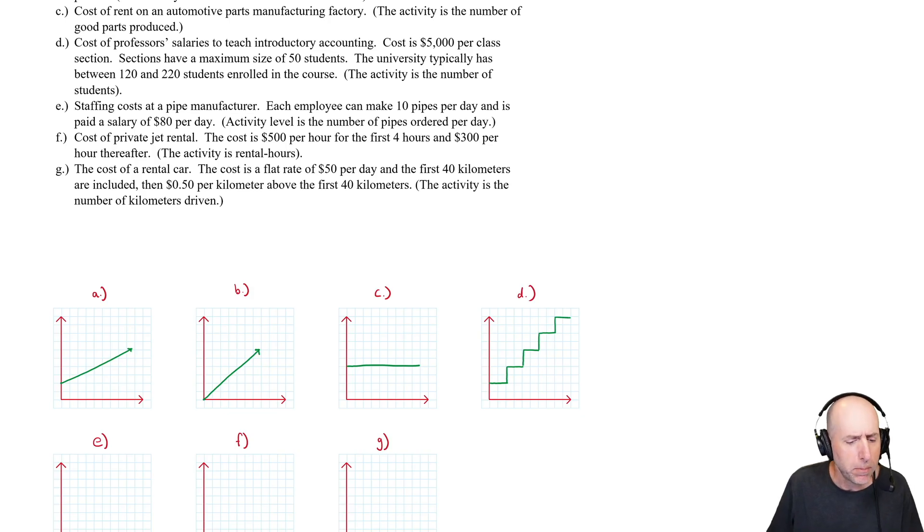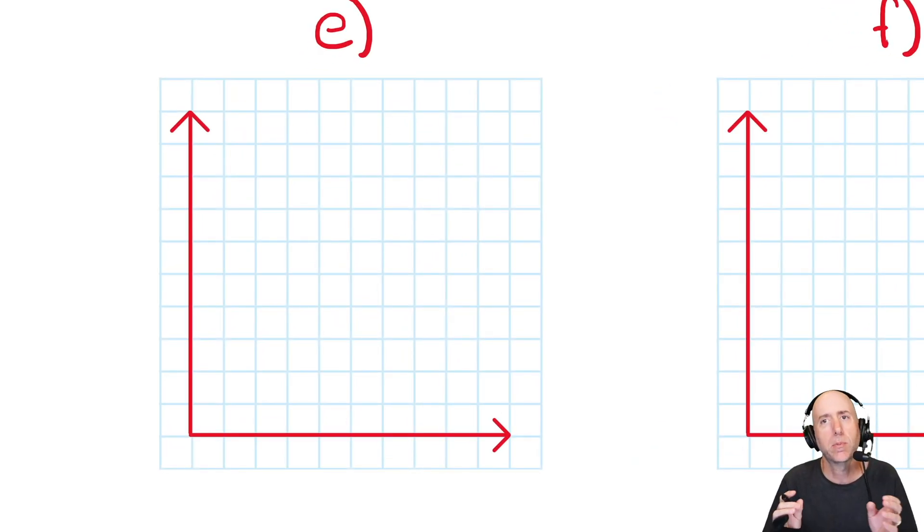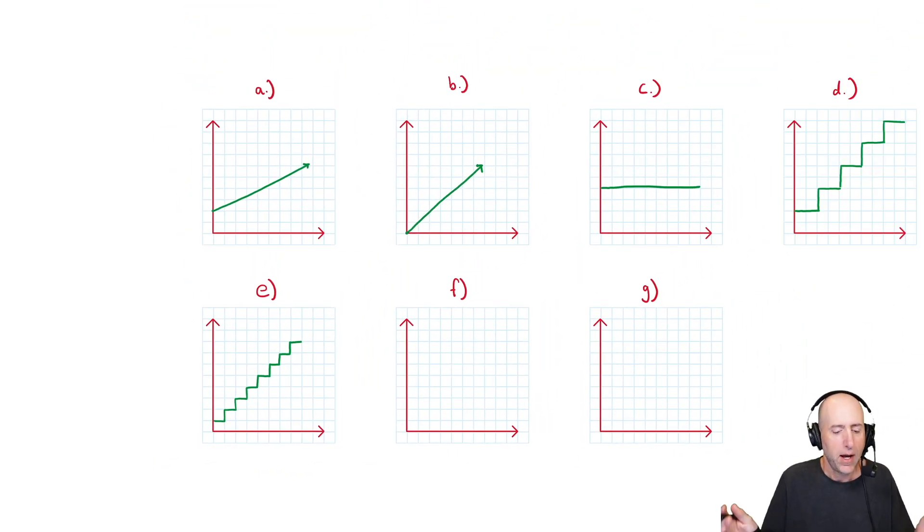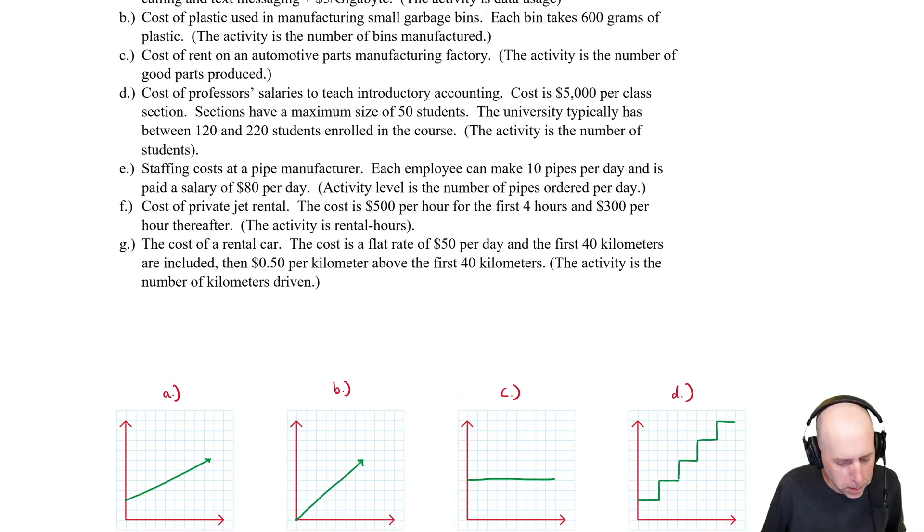Part E: staffing costs at a pipe manufacturer. Each employee can make 10 pipes a day and is paid a salary of $80 a day. Activity is the number of pipes ordered per day. So we have a capacity of 10 pipes per employee. If I need more than 10 pipes, I've got to bring in more employees. For the first 10 I'm just bringing in one person, paying $80 a day. As soon as I get up to 20 pipes, I've got to bring in a second employee, 80 bucks for them, 30 pipes, 40 pipes, and so on. This is almost like our step fixed. The only difference here is the steps are a little bit smaller, and so we would call this a step variable cost. It has more of the characteristics of a variable than a fixed cost, but very similar to our step fixed. The difference is the scale.